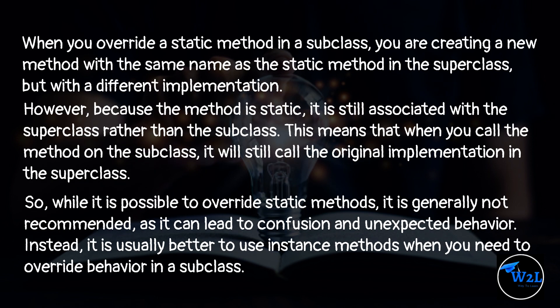When you override a static method in a subclass, you are creating a new method with the same name as the static method in the superclass, but with a different implementation. However, because the method is static, it is still associated with the superclass rather than the subclass. This means that when you call the method on the subclass, it will still call the original implementation in the superclass.